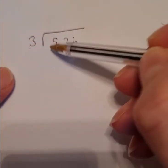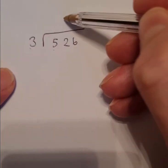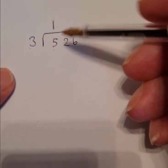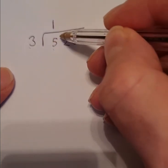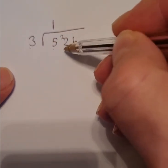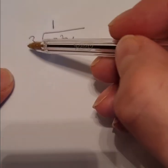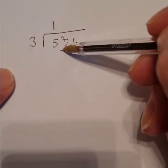So first of all we do 3 into 5. Well there's one 3 that fits into 5 and I have a remainder of 2. So I carry that remainder of 2 over to the next number. Now the next number becomes 22. So now I'm doing 3 into 22.